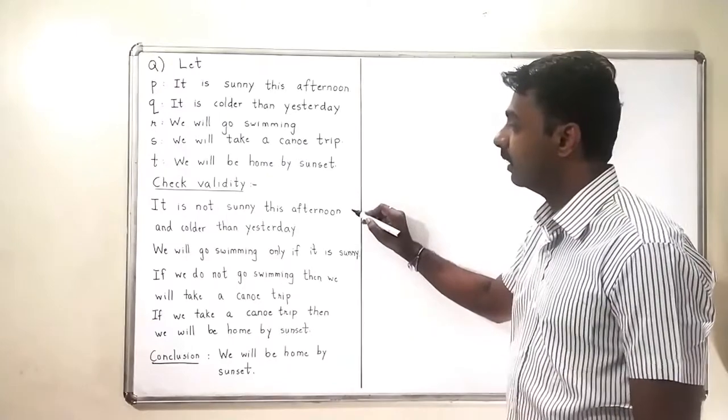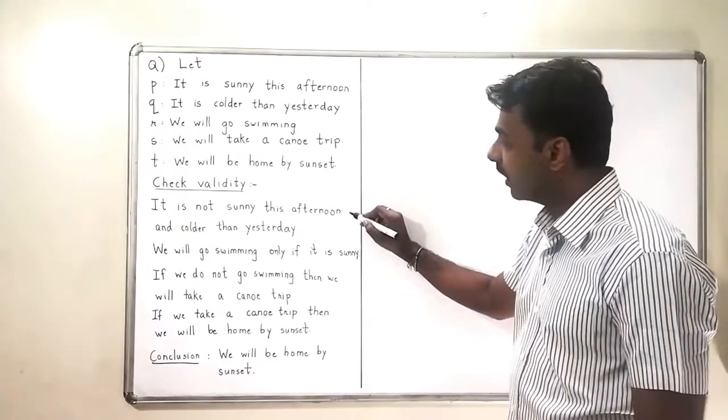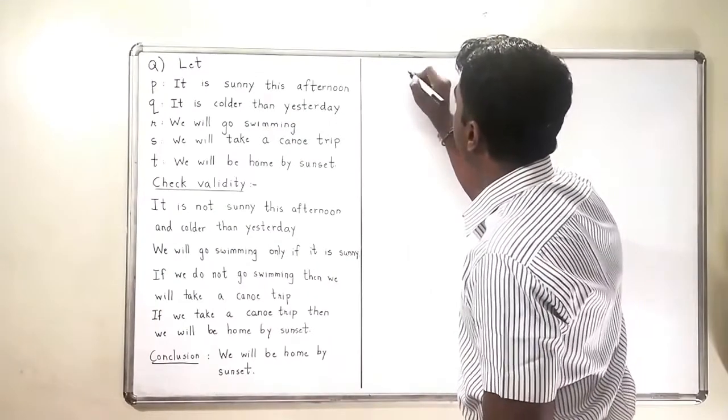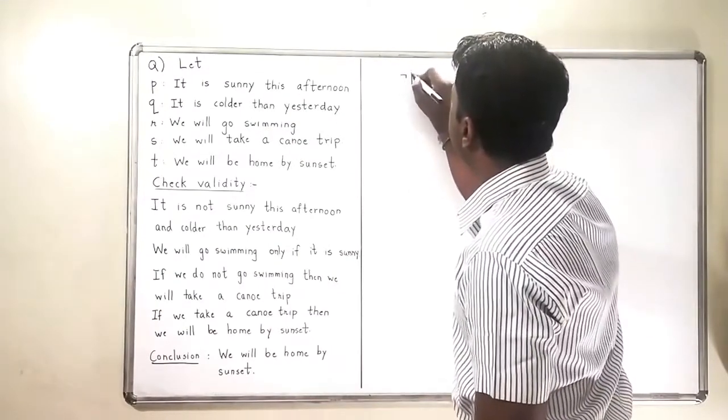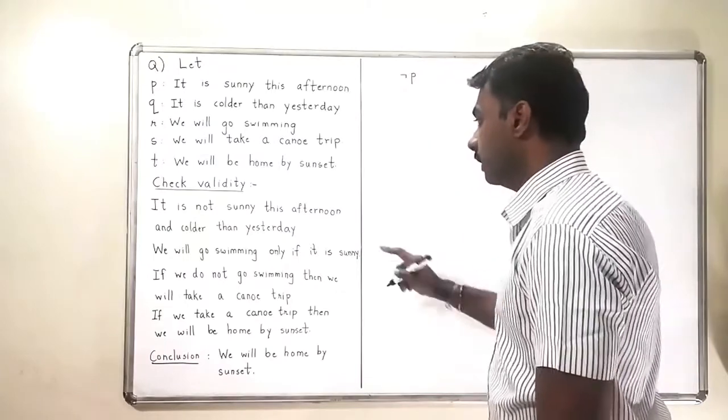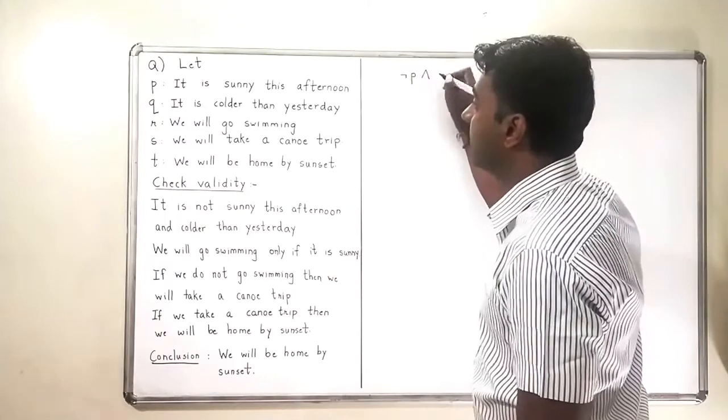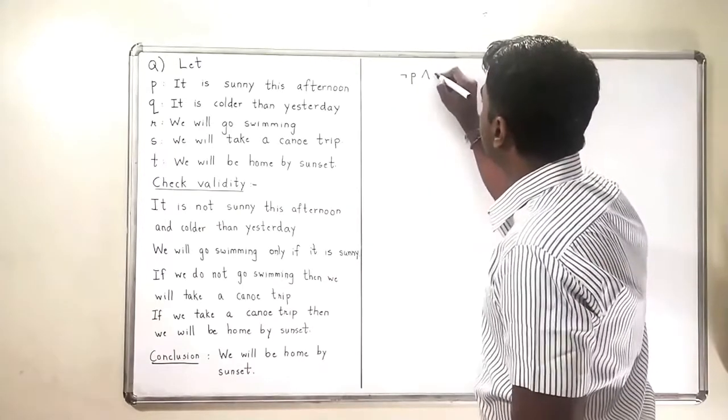The first statement of the argument is that it is not sunny this afternoon and colder than yesterday. It is not sunny means negation P, and colder than yesterday is denoted by Q.